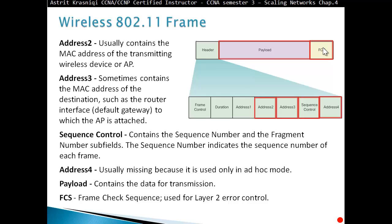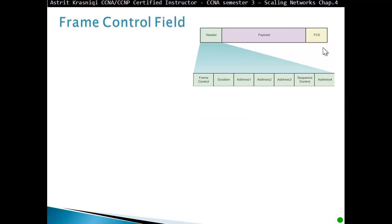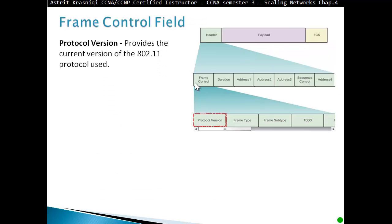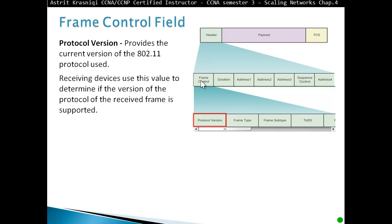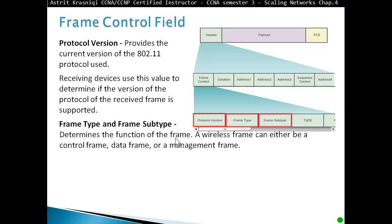In the frame control field, the protocol version provides the current version of 802.11 protocol that is being used. Receiving devices use this value to determine if the version of the protocol of the received frame is supported. Frame type and frame subtype determine the function of the frame. A wireless frame can either be a control frame, data frame, or management frame.